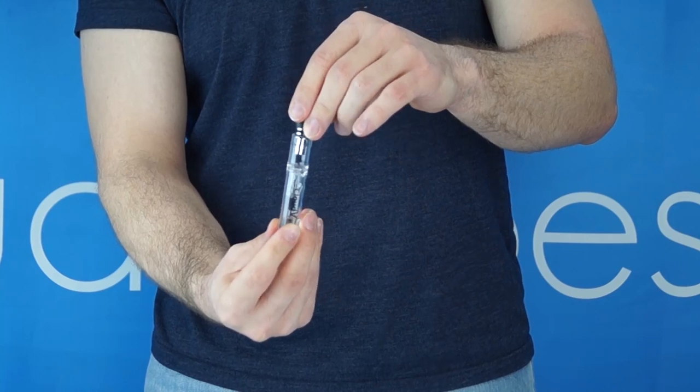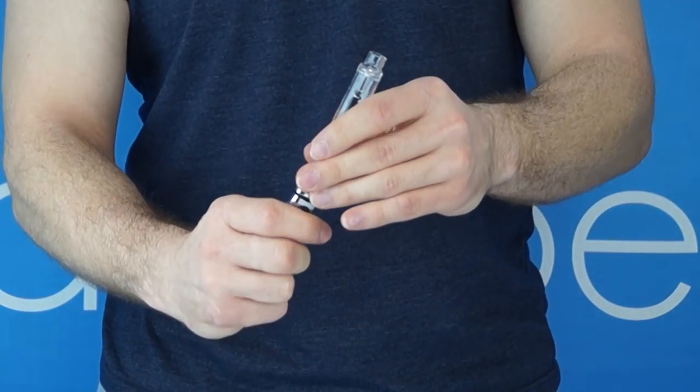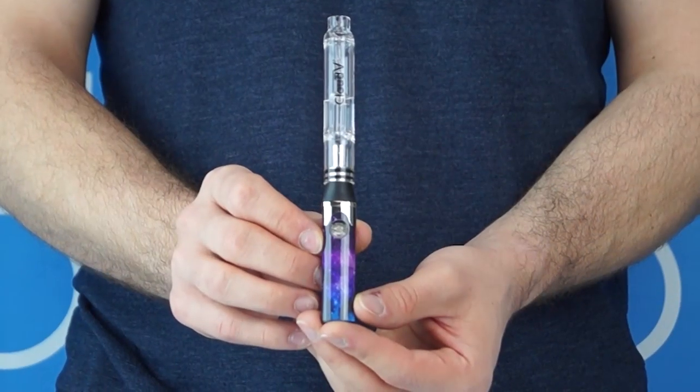Load and replace your atomizer into the bottom of your aqua non-spill bubbler. Attach the atomizer to your battery and have fun!